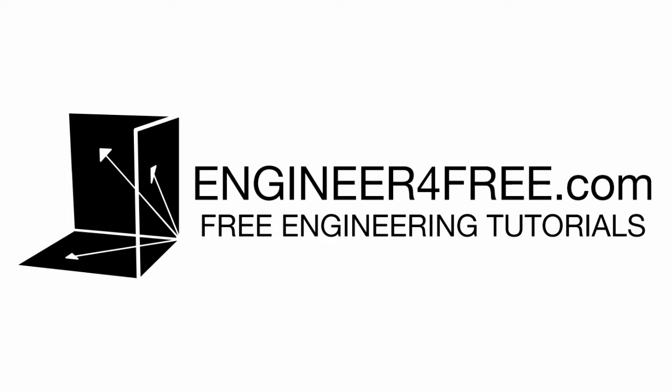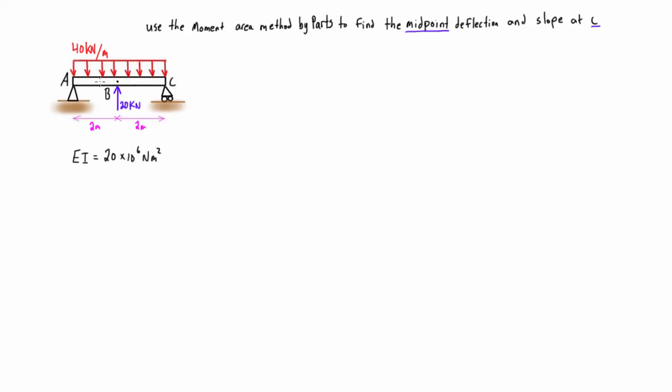All right, welcome back. In this video we are resolving this problem that we've already solved. There's another video on doing this example using the moment area method, but in this case the spin is that we want to do it with the moment area method by parts again to find the midpoint deflection and slope at C.